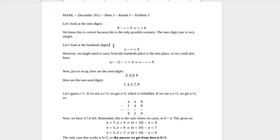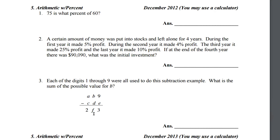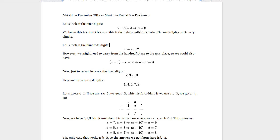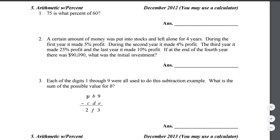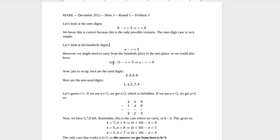Now let's look at the hundreds digit. If you look at the tens digit, we get b minus d equals f, which doesn't tell us much. But for the hundreds digit, we get a minus c equals 2. However, we also have to account for a possible carry from the tens digit, which would subtract a by 1, giving us a minus c equals 3. So either a minus c equals 2 or a minus c equals 3, and we know e equals 6. So the used digits are 2, 3, 9, and 6.